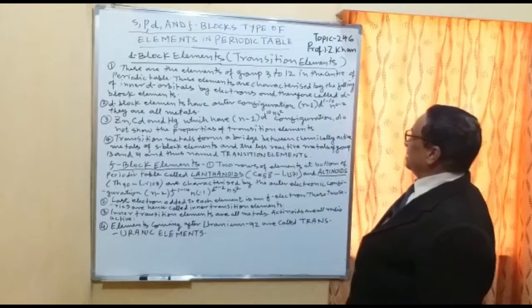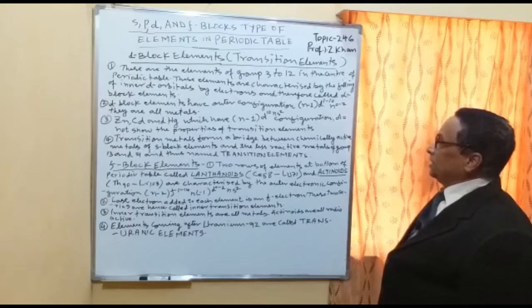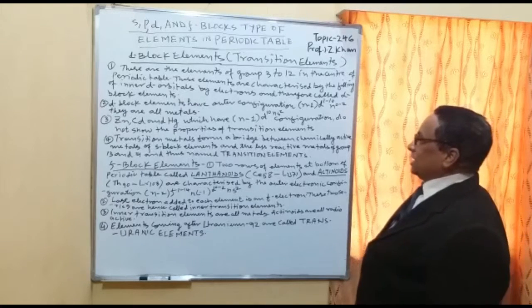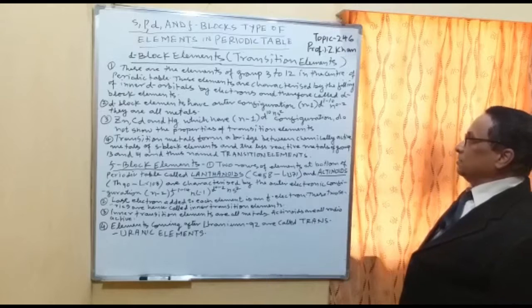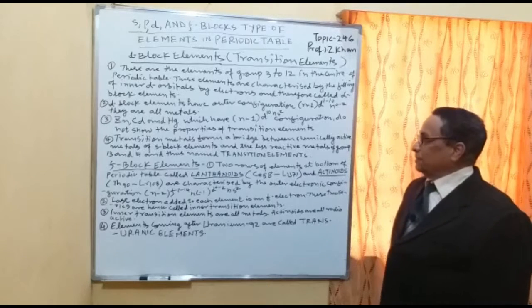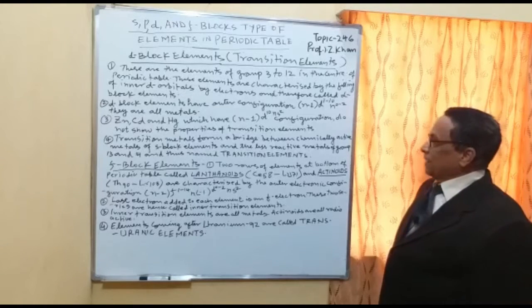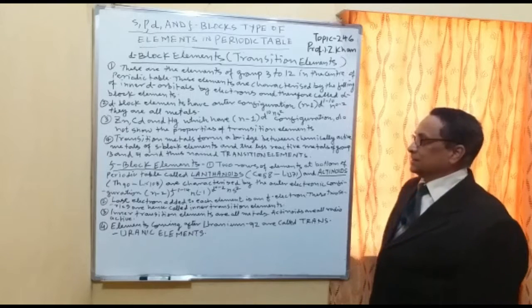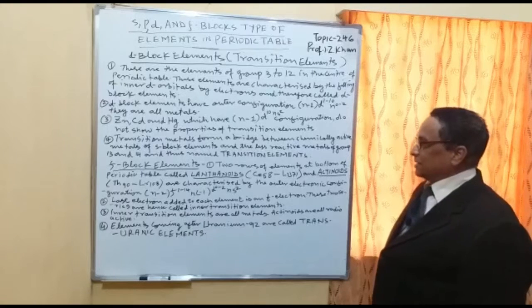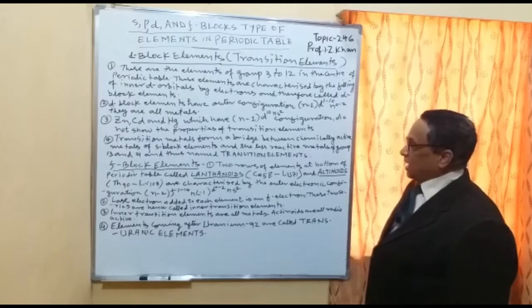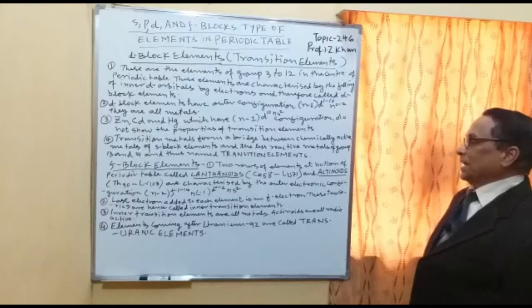D block elements are characterized by the filling of inner D orbitals by electrons and therefore called D block elements. They have outer configuration (n-1)D1–10 nS0–2. They are all metals. Zinc does not show the properties of transition elements. Transition elements form a bridge between the chemically active metals of the S block and the less reactive metals of groups 13 and 14, and thus are named transition elements.